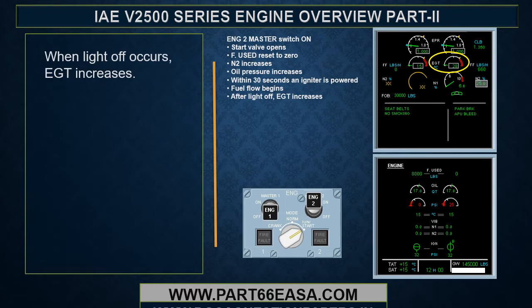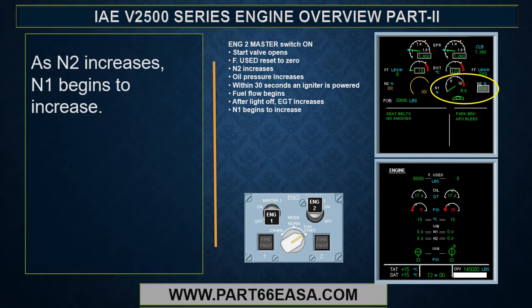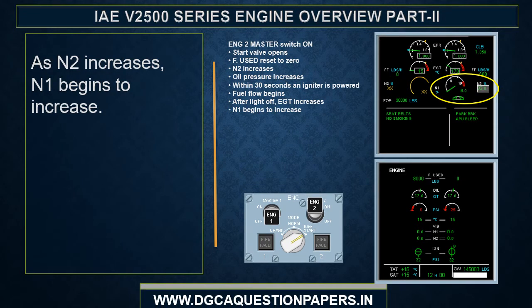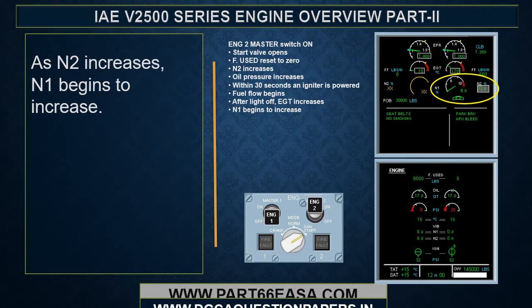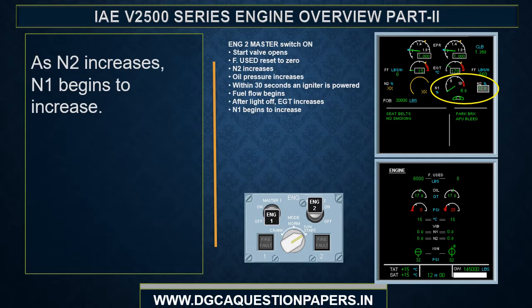When light off occurs, EGT increases. As N2 increases, N1 begins to increase.